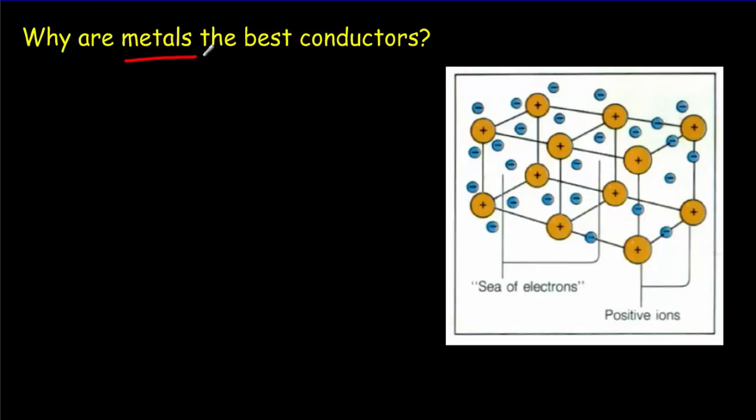So why is it that metals are the best conductors? Well, the metals have these free electrons that aren't attached to any particular atom. So there's this lattice here of these positive ions, which is composed of that positive nucleus and the electrons that are attached to the atom.